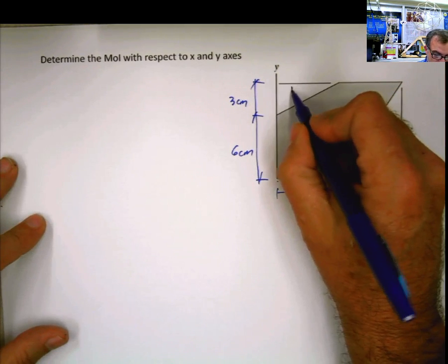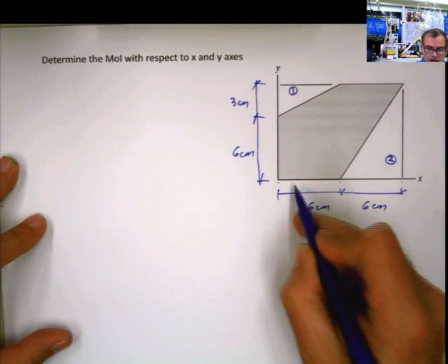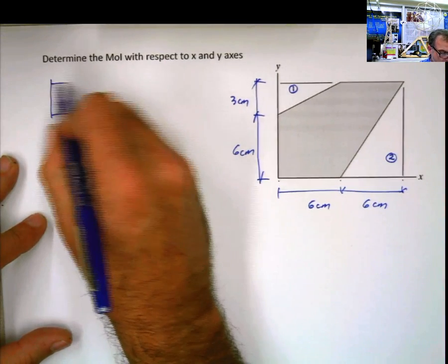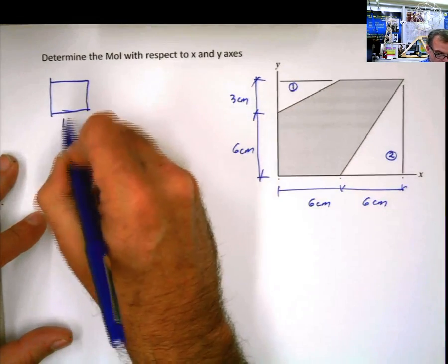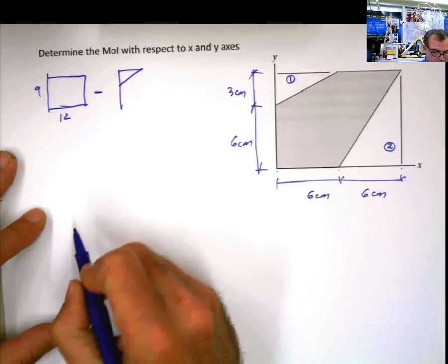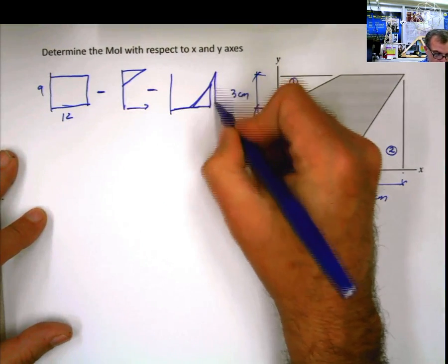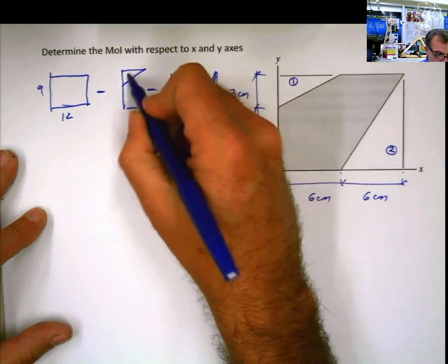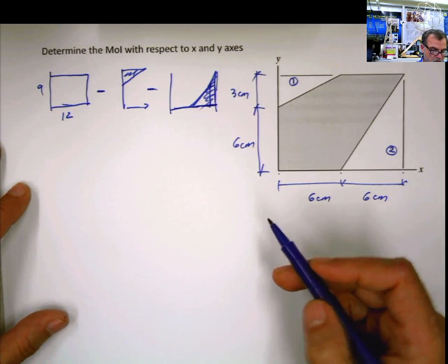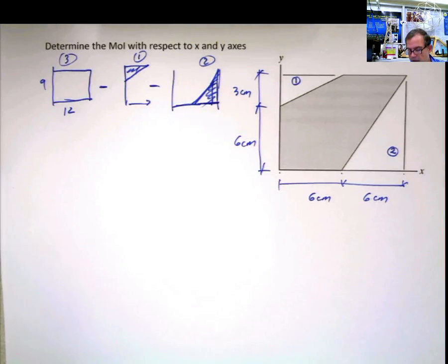So I'm going to say that this is my figure 1. And this is my figure 2. And now the whole rectangle here is my figure 3, the whole rectangle. In other words, I'm going to do this. A whole rectangle, exterior one, of 12 by 9, minus. And then I'm going to take this little piece here. And then I'm going to take this piece here also.